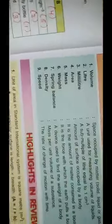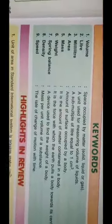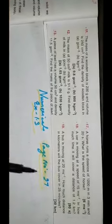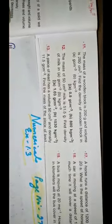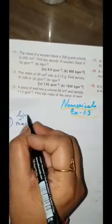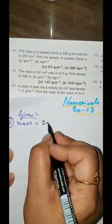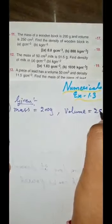Now children, we will do the numericals. These are the numericals from your same chapter, exercise 1.3, page number 27. First numerical — that is numerical 11 from your book, same numbering — the mass of a wooden block is 200 gram. So first we have to write: given mass is 200 gram and volume is 250 centimeter cube.